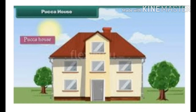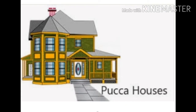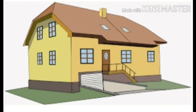Next one is pakka house. Pakka house is also known as a permanent house and these houses are made up of bricks, iron rods, cement, etc. They are very strong. Sometimes the permanent houses or pakka houses are sloping roof houses, flat roofed houses, and some are apartments. These are all examples for pakka houses.